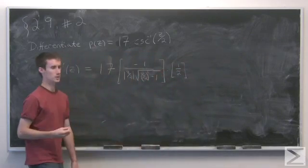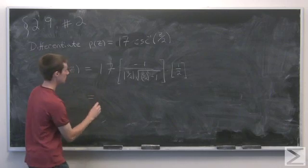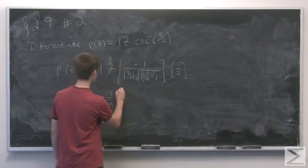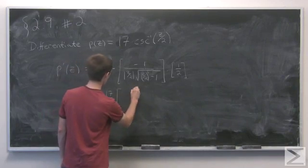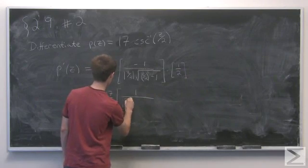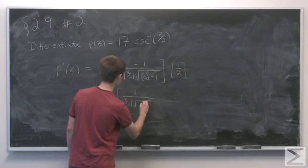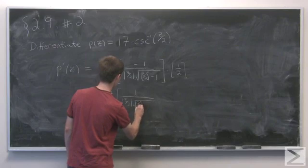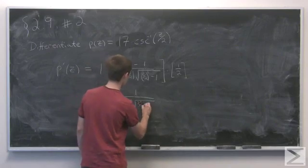And now we can simplify this to get negative 17 over 2 times 1 over the absolute value of z over 2 times the square root z over 2 squared, or z squared over 4, minus 1.